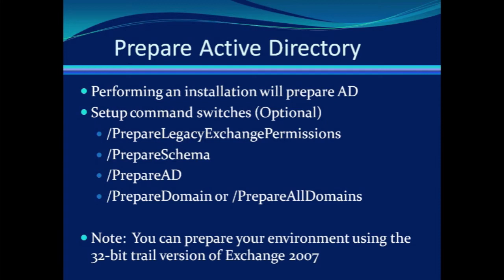Then we have the prepare domain or prepare all domains switches. These switches configure permissions on a container called domain for your Exchange servers, organization administrators, authenticated users, and mailbox administrators. It creates the system objects container, establishes proper permissions, configures a new domain global group, and adds that group into the universal security group.